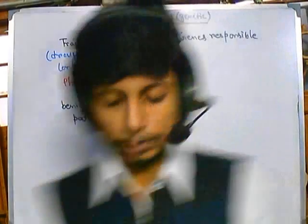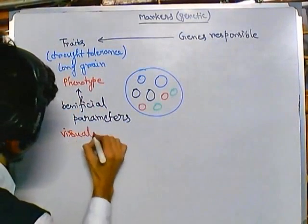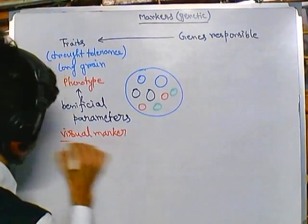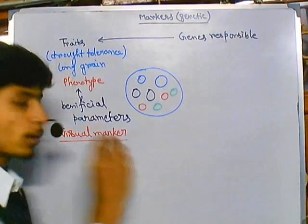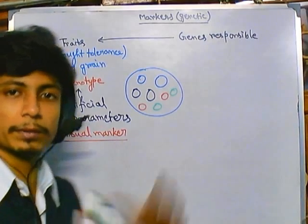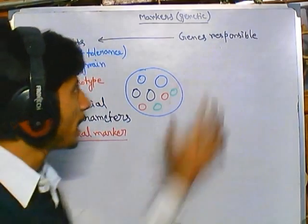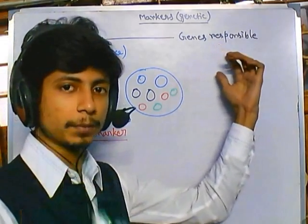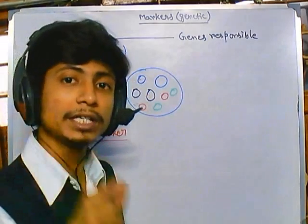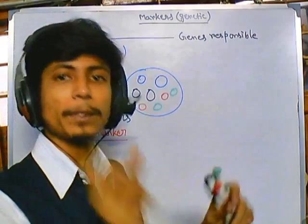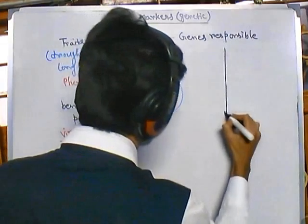These visual markers are the product of some important gene function — whatever we see is a product of gene function. We need to find the corresponding gene. Those genes responsible for providing all these beneficial parameters are called molecular markers, because we are talking about molecules like DNA.